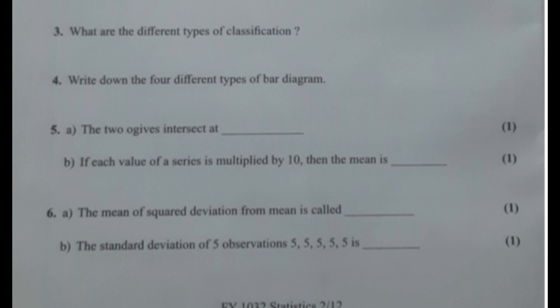The last type is the percentage bar diagram. Percentage bar diagram is a modified form of the component bar diagram. It is used when the comparison of components is important. To construct a percentage bar diagram, the component bar corresponds to the percentage of the total of each category. These are the different types of bar diagram.